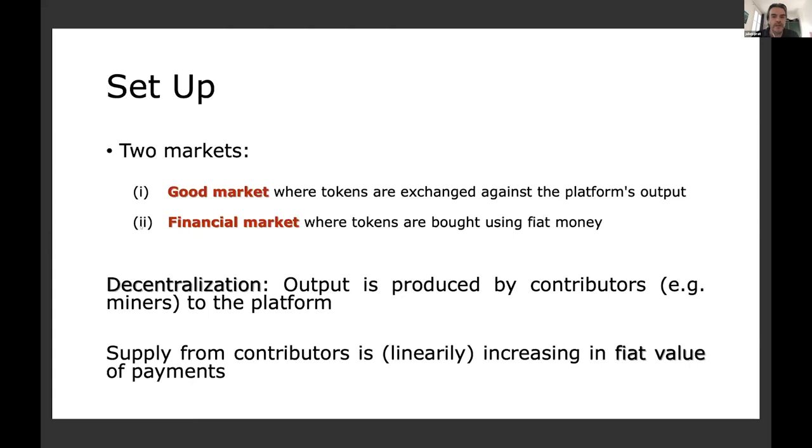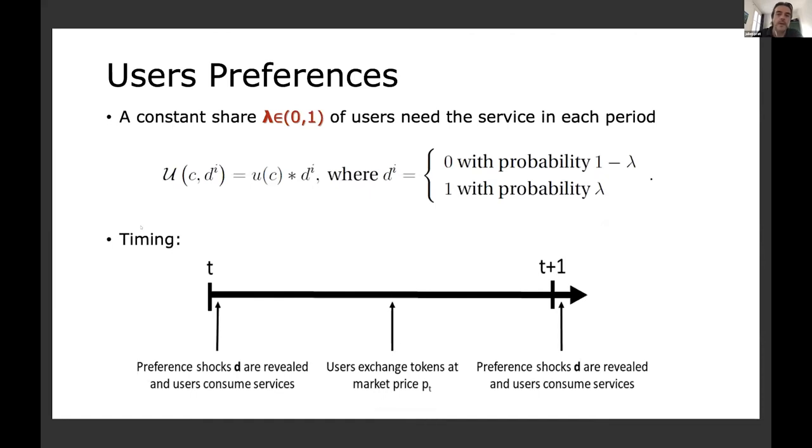In practice, you could introduce tokens on a centralized platform. Facebook, for instance, is thinking about that. But here we want to think more of a decentralized environment. So the output of the platform will be produced by contributors. Think of them as miners, the contributors to the platform. And the supply from contributors will be increasing in the fiat value of the payments. The contributors don't really care about the token. They care about the value of this token in fiat. So we have this external currency, which we call fiat, can be dollar or euro if you want.